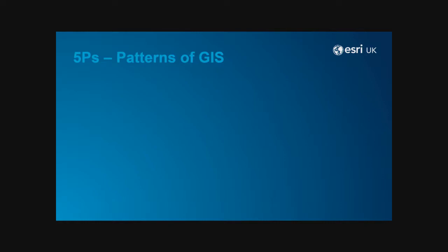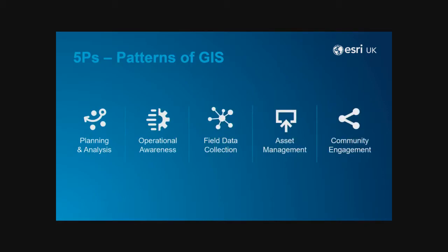We then talk about the five patterns of GIS — the high-level business needs our customers use our system of technologies for. It's geographic, geospatial, geotemporal. It exploits the where and the when, you understand the why, you determine the what next. And we put it into five high-level buckets: planning analysis, operational awareness, field data collection, asset management, and community engagement. Everything falls into one of those buckets. And everything is improved by the integration of enterprise data so you're not just exploiting the where and when — you're understanding the semantics. That's the real trick.